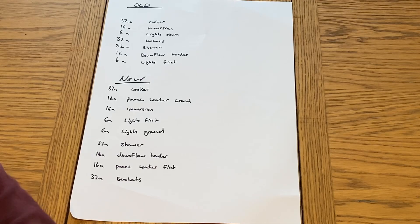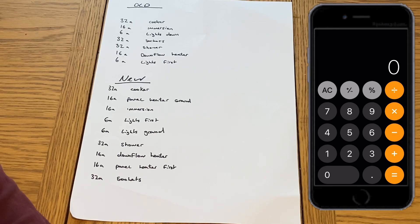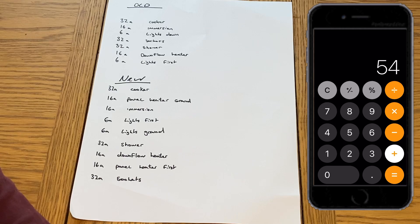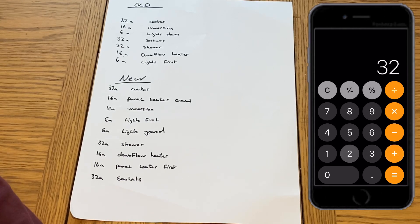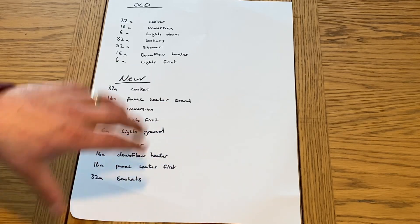I like to use this method because especially when you're on site and you're filling out an EIC or an EICR, you can just use your calculator on your phone. There's no crazy calculations to do. Obviously there's different methods of doing maximum demand diversity which we'll look at in further videos, however this one is just a generic one which we're going to use.